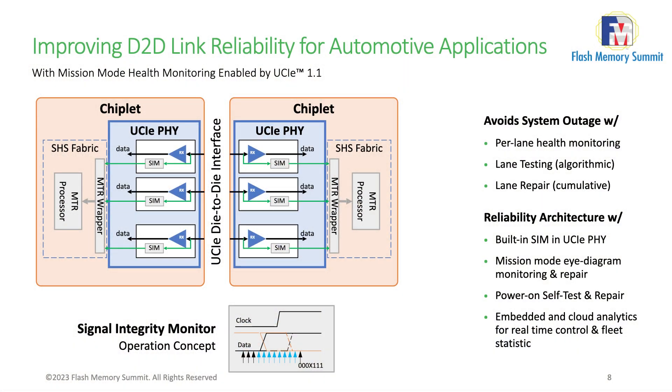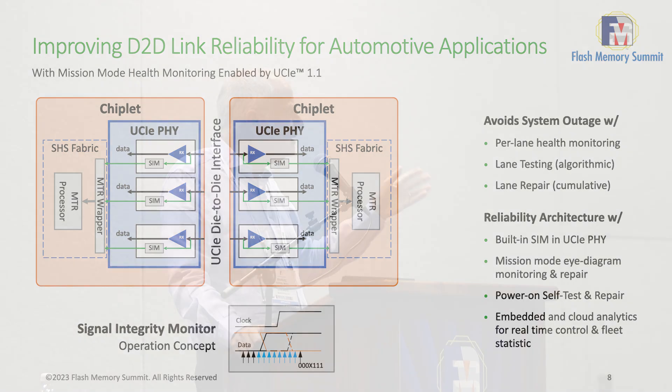UCIe supports all of these use cases and is targeting this open ecosystem. I want to spend a couple more minutes on examples of how we can build upon UCIe to address specific application challenges. One example is high-reliability applications — the poster child being Level 4 autonomous driving. In full autonomy, you cannot accept a system failure after it happens; it will be too late. The idea is to continuously monitor the health of each individual lane as it is operating and take decisions in appropriate time before an outage or fault appears.